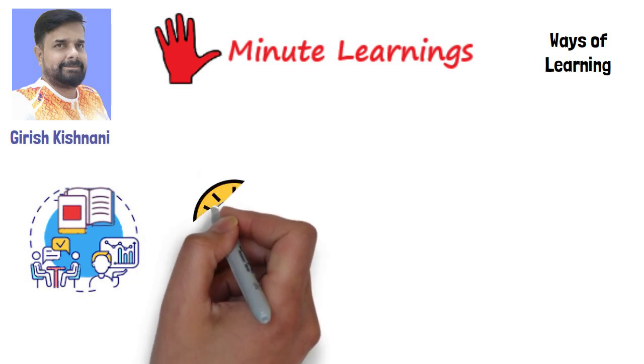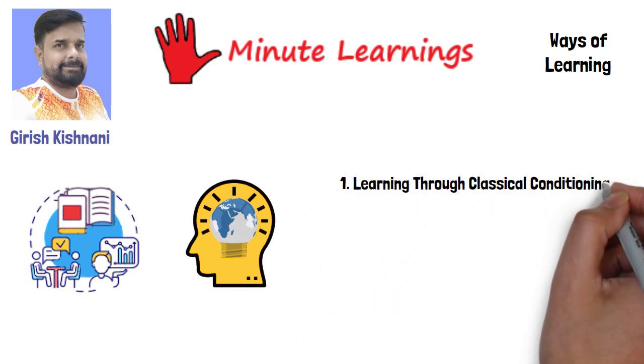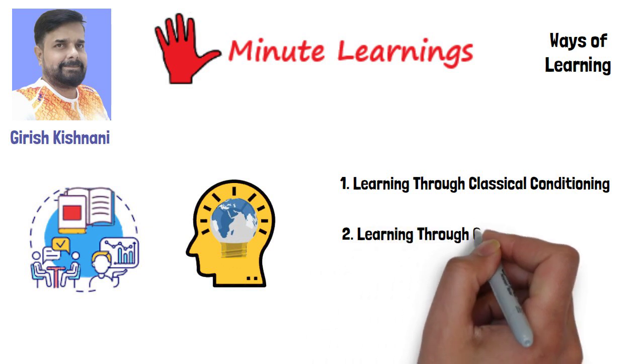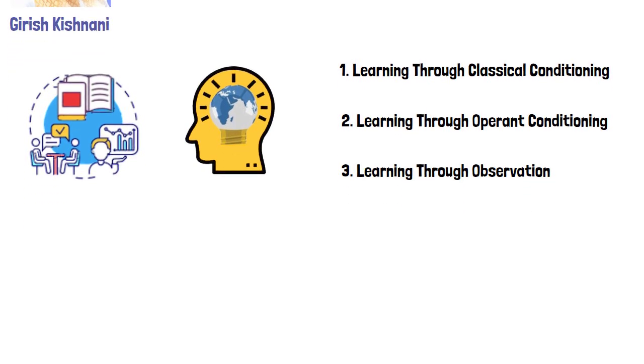To explain how and when learning occurs, psychologists have proposed a number of different theories, namely learning through classical conditioning, learning through operant conditioning, and learning through observation. Let's understand them in detail.